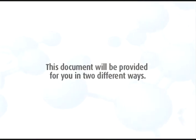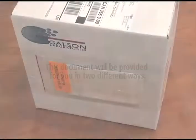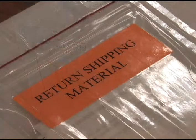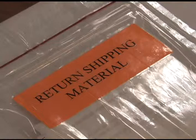This document will be provided for you in two different ways. All return shipping labels and documents can be located in a ziplock bag on the outside of the package. The bag will be labeled Return Shipping Material.